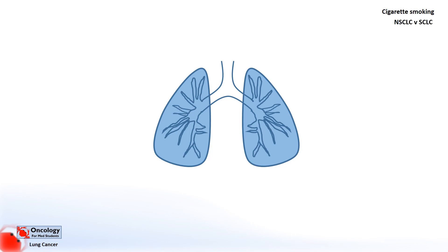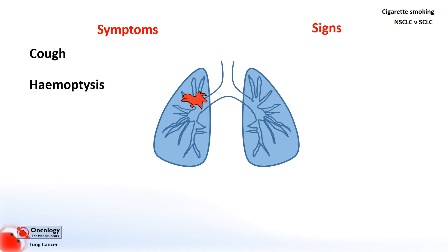So how do patients with lung cancer present to the doctor? We can think of this in terms of symptoms, which are things that the patient themselves experiences and reports, and signs, which are observations made by the clinician. Both signs and symptoms are easy to understand if we think about the effects the tumour is having on the lungs. The most common things patients will complain of are cough and haemoptysis — coughing up blood — which both occur because unstable tumours can cause blood vessels to break and bleed, and blood or tumour can irritate the airways and initiate cough reflexes.